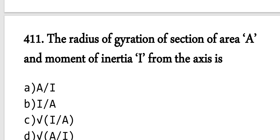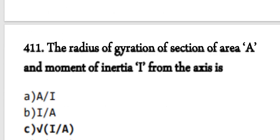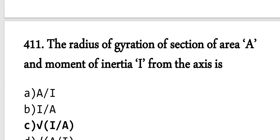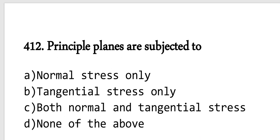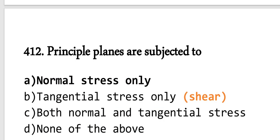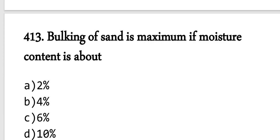Question 411: The radius of gyration of a section of area A and moment of inertia I from the axis. Radius of gyration is nothing but square root of I by A, where I is the moment of inertia and A is the section area. Option C is correct. Question 412: Principal planes are subjected to normal stress only, not shear stress. When normal stress is subjected where shear stress is zero, that's the principal plane. Option A is correct.